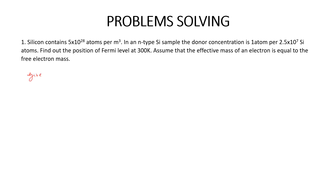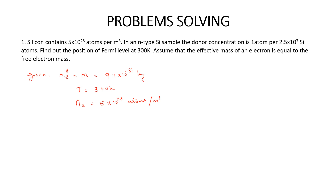So given: Me* is equal to free electron mass M, which is equal to 9.11 into 10 power minus 31 kg. T is equal to 300 Kelvin. Then concentration of electrons in n-type semiconductor is given as 5 into 10 power 28 atoms per meter cube. Then we are asked to find out EF.